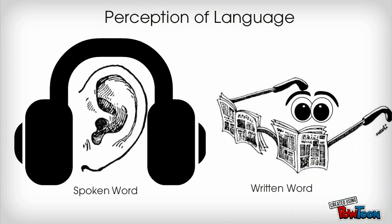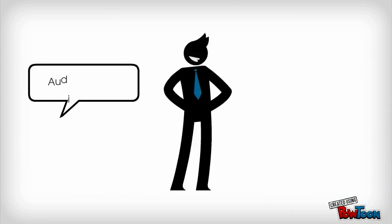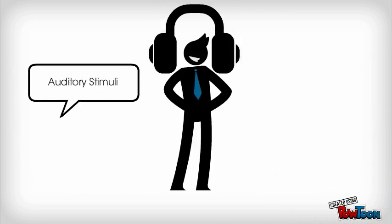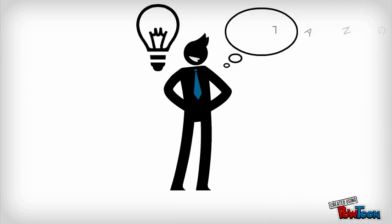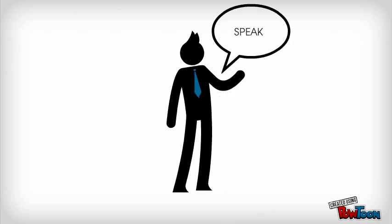Humans take auditory and visual stimuli and they perceive this as language in the brain. Once language is understood, humans are able to use language to speak and to write what they are thinking.